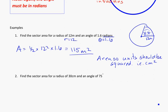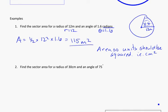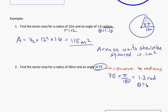Looking at one more example. Find the sector area for a radius of 30 centimeters and an angle of 75 degrees. So again here, 75 degrees, I need to convert. Let's do that first, convert to radians. 75 times pi over 180 equals 1.3 radians. So this is my theta, theta equals 1.3. I know that my radius equals 30.